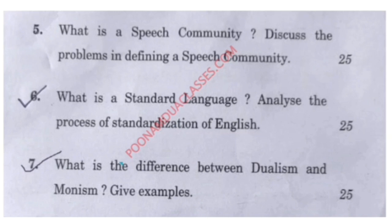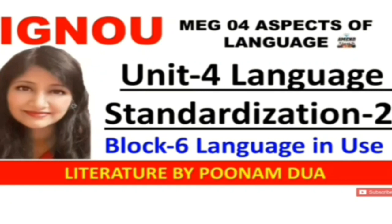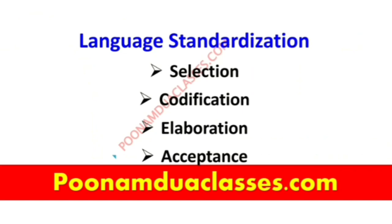Question six asks: what is a standard language, and what is the process of standardization of English? Standard languages arise when a certain dialect begins to be used in official form — in administrative matters, literature, and economic life — leading to the minimization of linguistic variations. From a societal point of view, there are four steps for standardizing any language: selection, codification, elaboration, and acceptance.